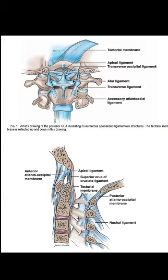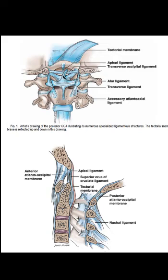The role of the transverse ligament and alar ligament are important clinically. The transverse ligament keeps the Dens up against the anterior arch of C1 to form the pivot joint. The alar ligaments restrict rotational motions of C1 and C2 at end range.